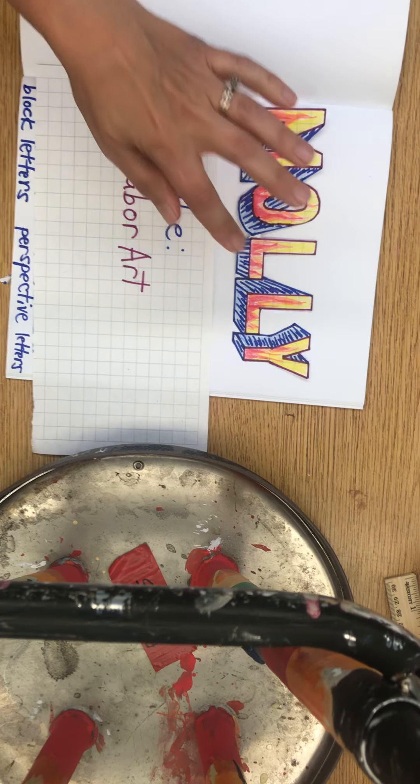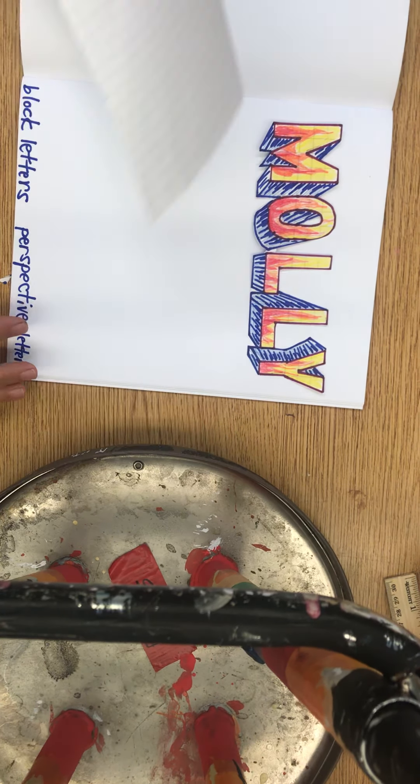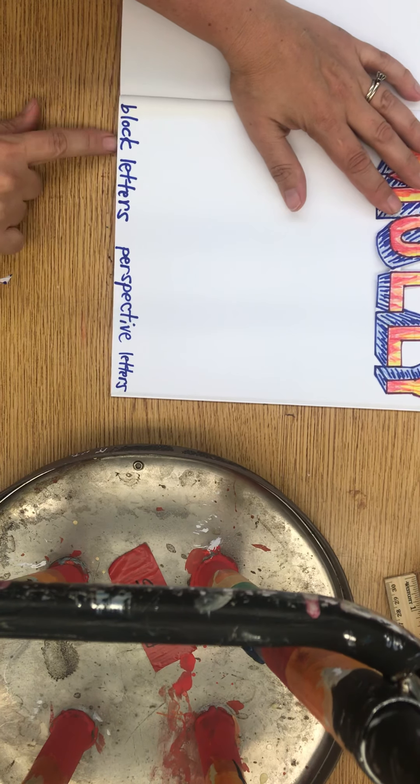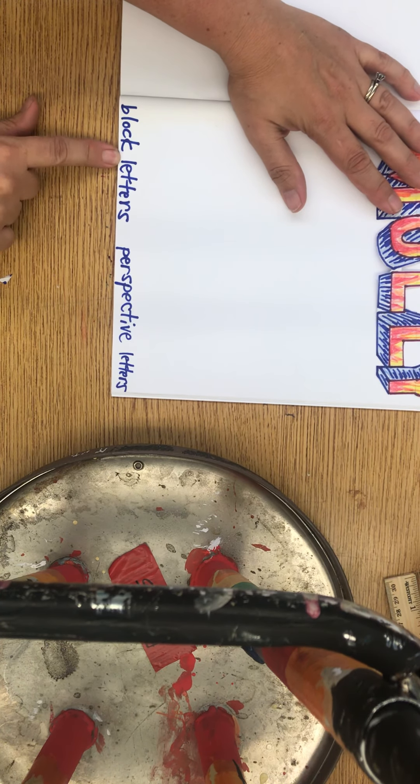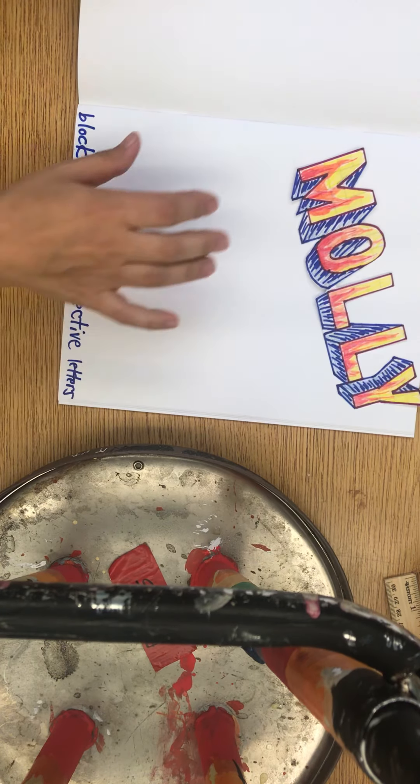So, here's my finished one. I'm going to glue that right down on the page of our sketchbook that we have block letters, perspective letters.